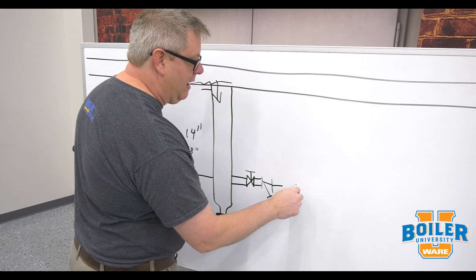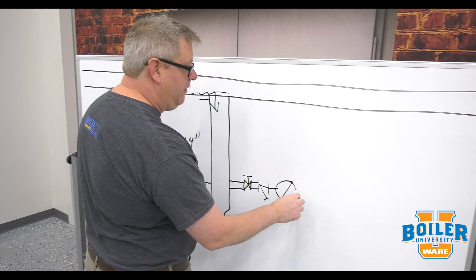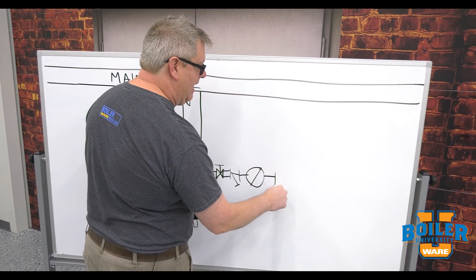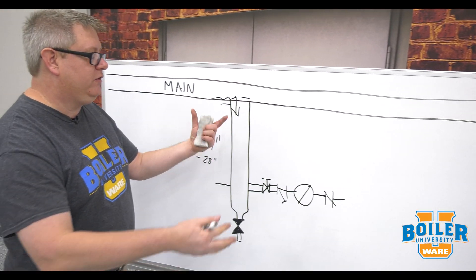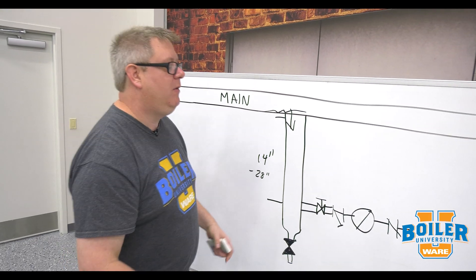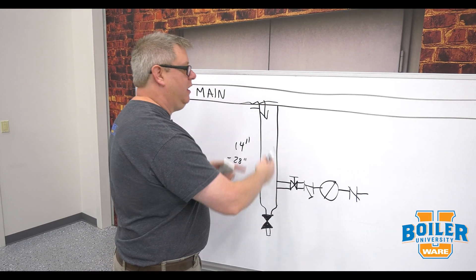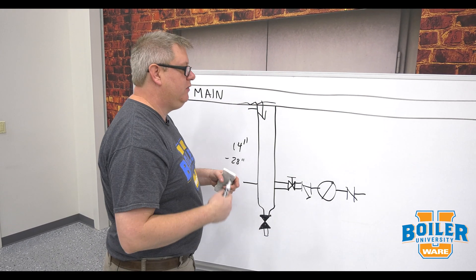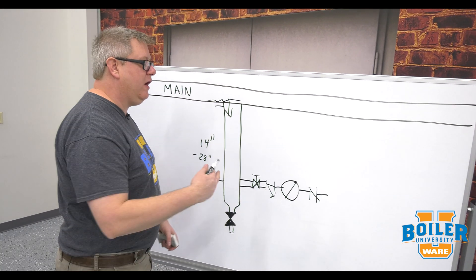Then we're going to have our trap itself and this is just a generic icon for a trap. On the outlet of the trap we're going to have a check valve and the benefit of a check valve on the outlet of a trap is when the system's shutting down there's no way for the vacuum and the steam system to suck condensate back into the header.